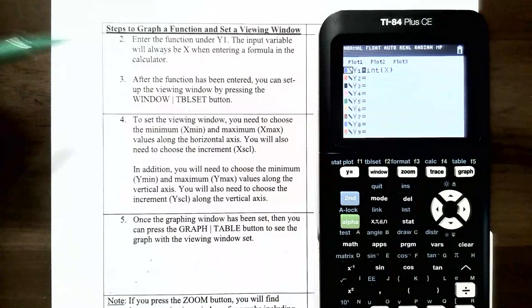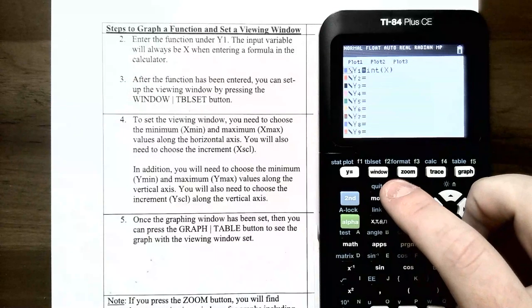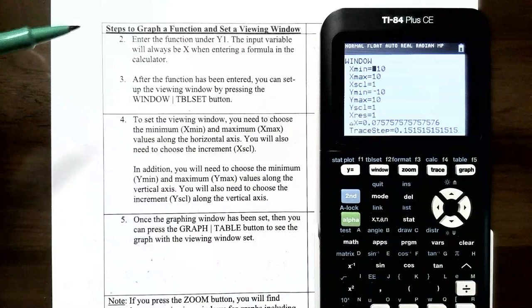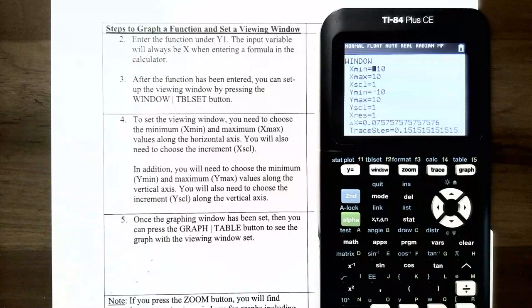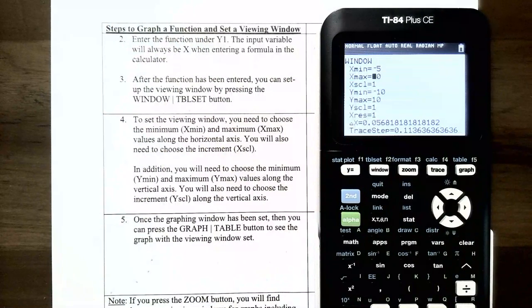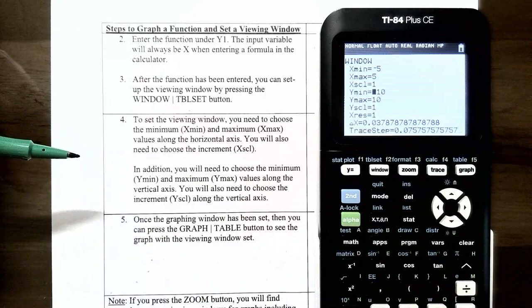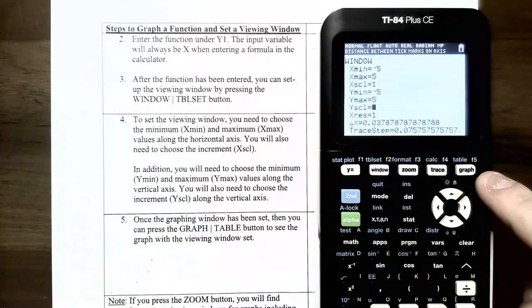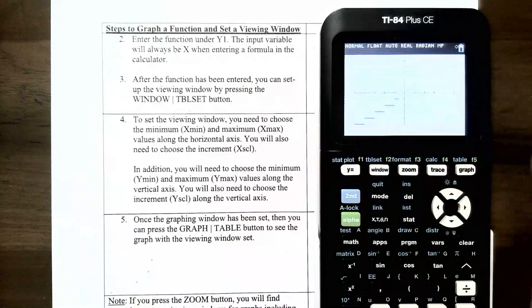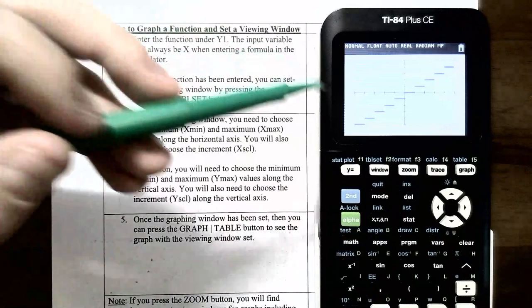Next, go to the WINDOW screen. Set Xmin = -5, Xmax = 5, and Xscale = 1 so each tick mark counts by ones on the x-axis. Set Ymin = -5, Ymax = 5, and Yscale = 1. Once the viewing window is set up correctly, hit GRAPH in the upper right corner of the calculator to see the graph.